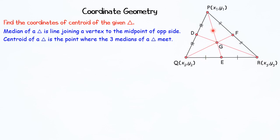Another property of the centroid is that it always divides all three medians in the ratio 2:1. So PG to GE is in the ratio 2:1. Knowing this data, let's find the coordinates of the centroid.